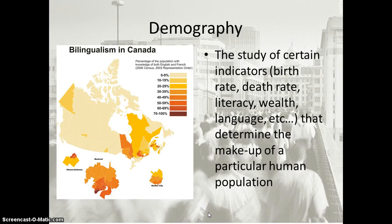Geographers and scientists alike study what we call demography. Demography is a scientific study of population characteristics. Demographers look statistically at how people are distributed spatially and by age, gender, occupation, fertility, health, and so on. Demography is really the study of certain indicators that determine the makeup of a particular human population.